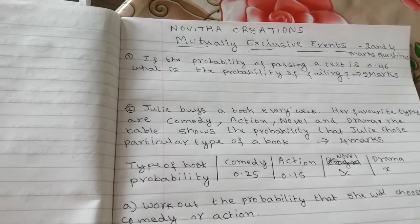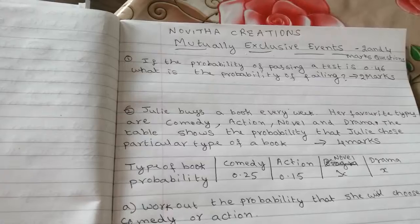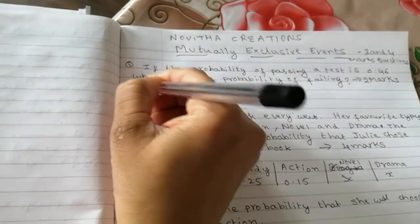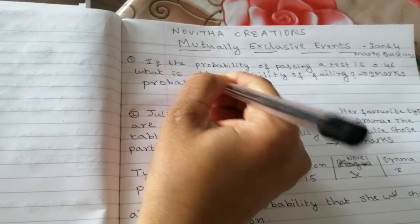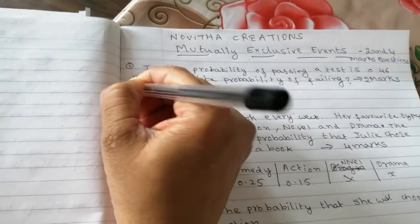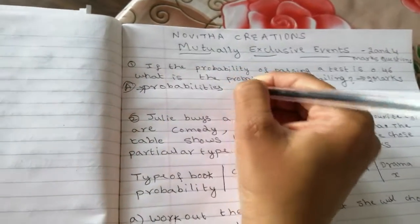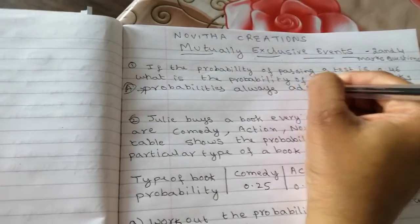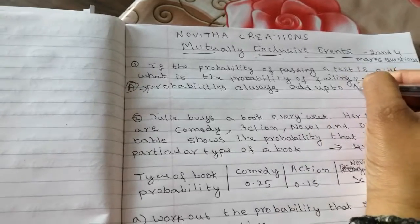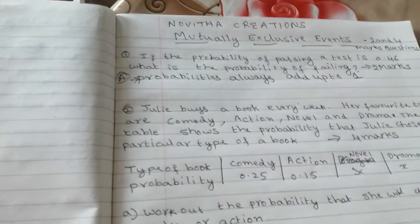How you can solve? We always need to remember, probabilities always add up to 1. Probabilities always add up to 1. This is the golden rule to solve this type of question.